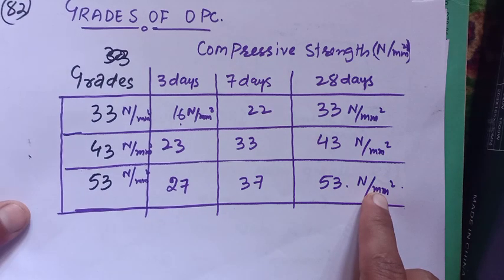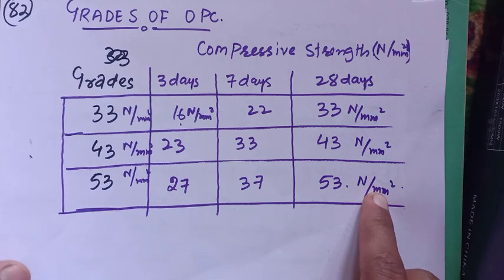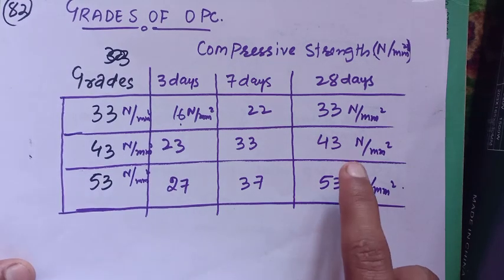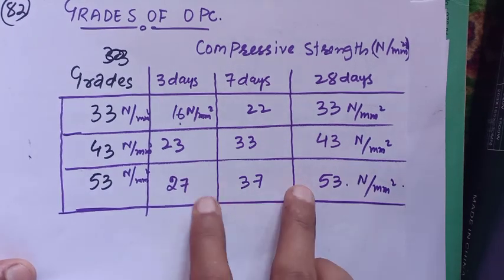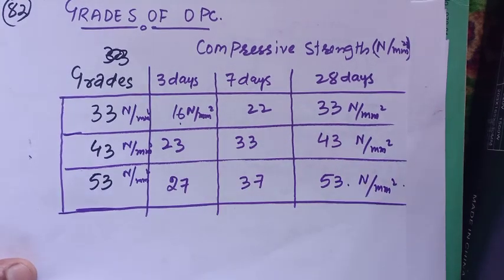These are the grades of ordinary Portland cement. We have already discussed about the grades of concrete as well.